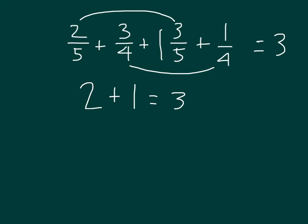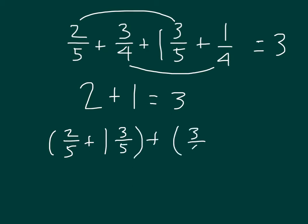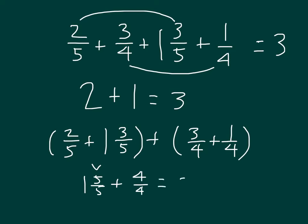We can rearrange this and write it out as 2 fifths plus 1 and 3 fifths plus 3 fourths plus 1 fourth. You'll notice that we grouped the like denominators: 2 fifths plus 1 and 3 fifths was 2, and 3 fourths plus 1 fourth was 1. And our answer is 3, and there I've shown some work to support that answer.